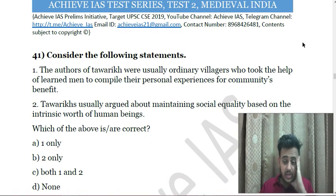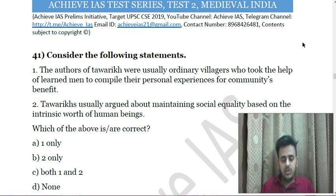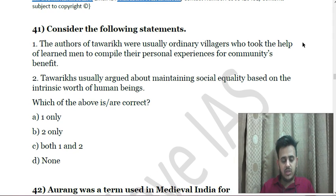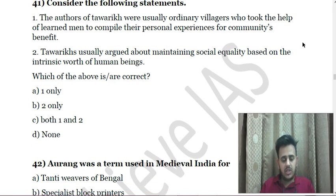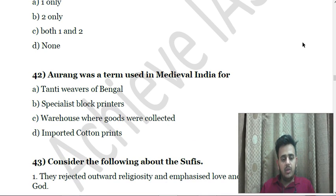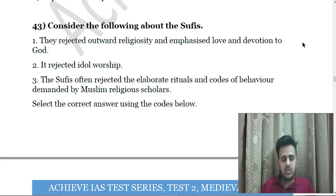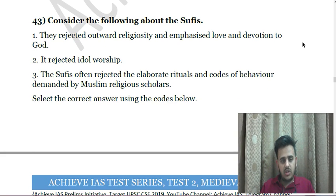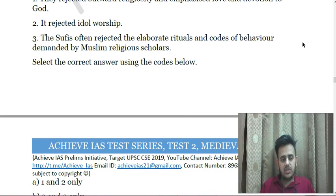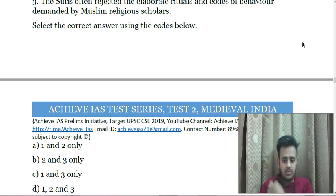Next: The authors of Tawarikh were usually ordinary villagers who took the help of learned men to compile their personal experiences for community benefit. Second, Tawarikh usually argued about maintaining social equality based on the intrinsic worth of human beings. Next: Aurang was a term used in medieval India for — A. Tanti weavers of Bengal, B. Specialist block printers, C. Warehouse where goods were collected, D. Imported cotton prints. Next: Consider the following about the Sufis — First, they rejected outward religiosity and emphasized love and devotion to God; Second, they rejected idol worship; Third, Sufis often rejected the elaborate rituals and codes of behavior demanded by Muslim religious scholars.